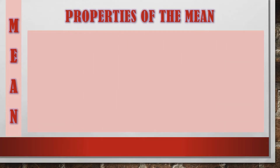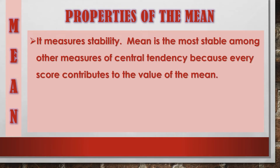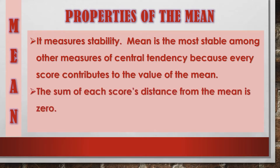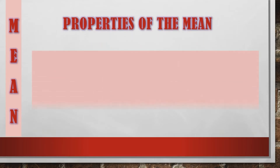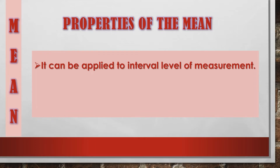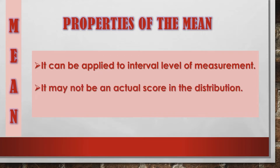What are the properties of the mean? First, it measures stability — the mean is the most stable among measures of central tendency because every score contributes to its value. Second, the sum of each score's distance from the mean is zero. Third, it may easily be affected by extreme scores. Fourth, it can be applied to interval level of measurement. Fifth, it may not be an actual score in the distribution. Sixth, it is very easy to compute.